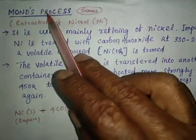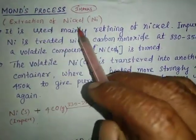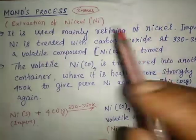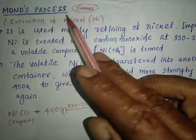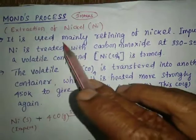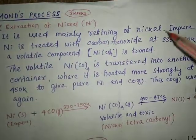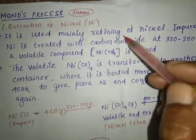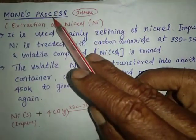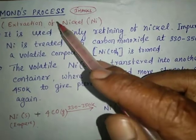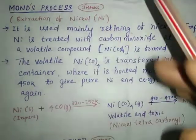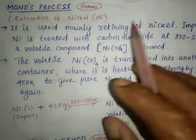This is the Mond's Process. This is the extraction of nickel. If you have a purification of nickel, this is where Mond's Process is used. It is used mainly for the refining of nickel.